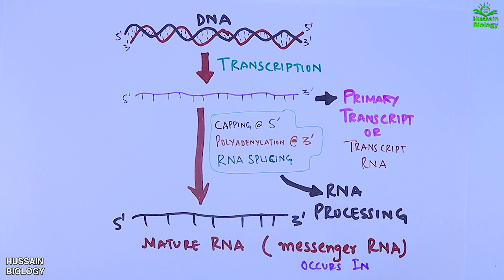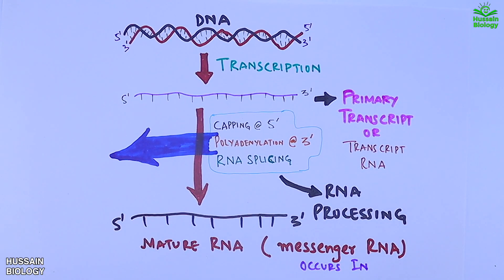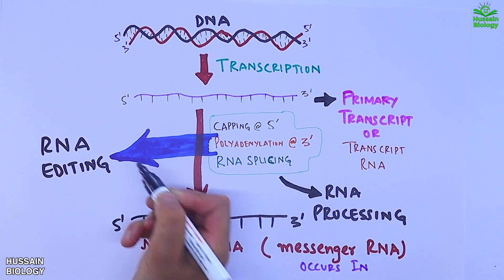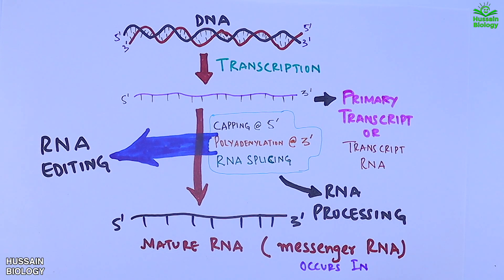Now, where is the RNA editing part? RNA editing is not part of standard RNA processing. It is mostly done in between the steps of RNA processing — like after capping, prior to splicing, or even after splicing. This RNA editing process can bring out new proteins, such as through the RNA editing of the ApoB gene.